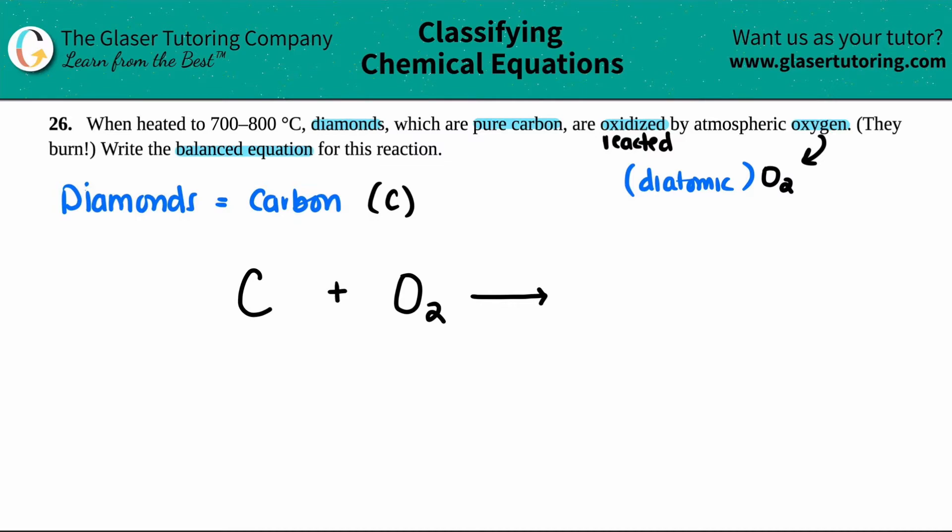Now, if we just need to give the states, a diamond is literally just a solid. If I can see a diamond, it's in a solid form, and that means that the carbon is in a solid form as well. And oxygen, if it's in the atmosphere, it would be a gas. So those are our states.